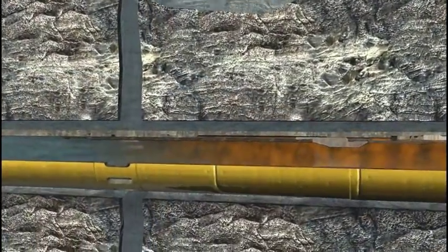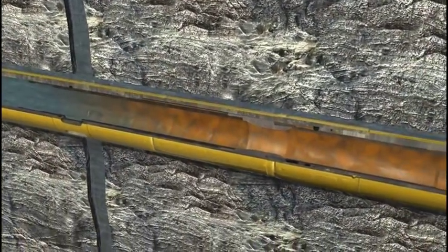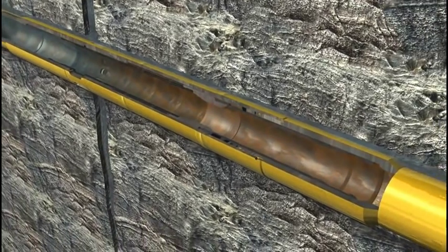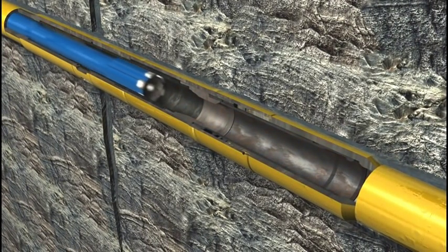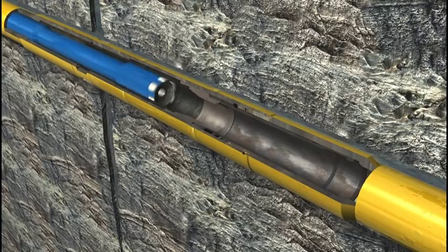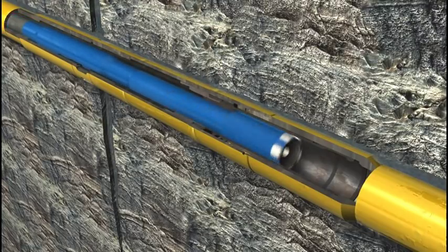If required, the balls and seats can be milled up, leaving a full opening throughout the liner. The reclosable frack sleeves allow the operator to isolate a particular zone for water intrusion, or to isolate for re-fracking at a later date.